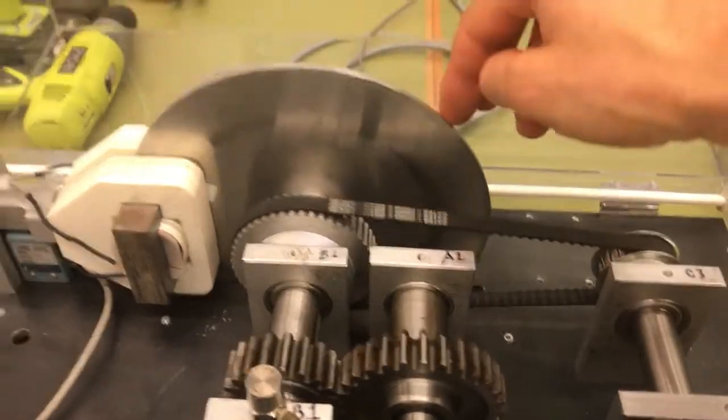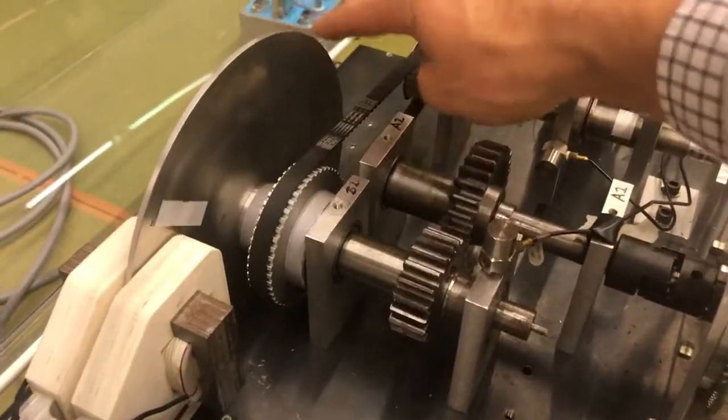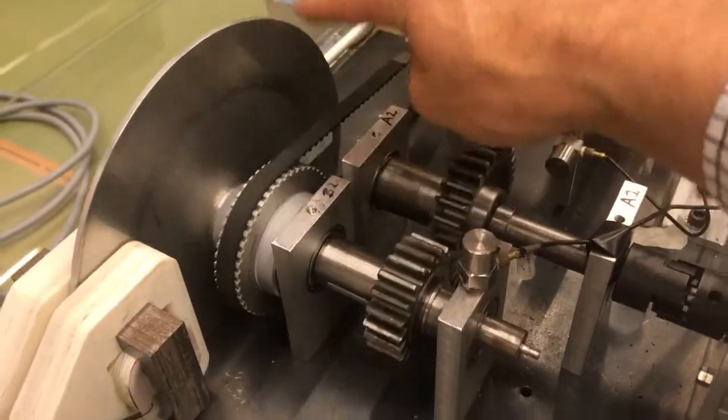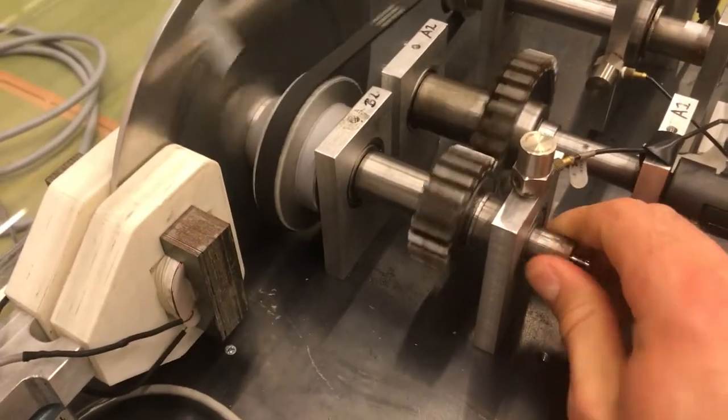Lastly, on this shaft here I have an eddy current brake, so I've got a large rotor here, an aluminum rotor, again there's a piece of tape on there so I can determine the number of revolutions per minute. But as this rotates,